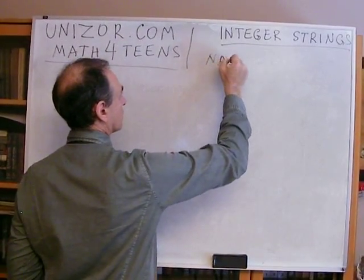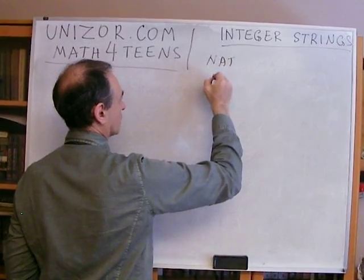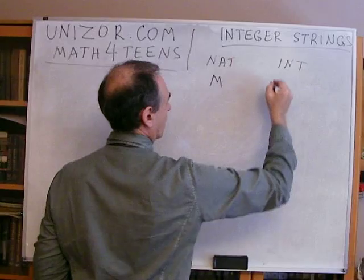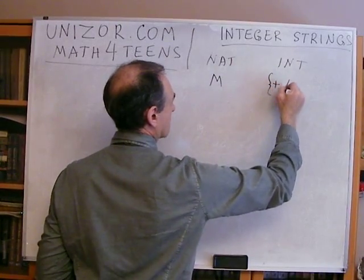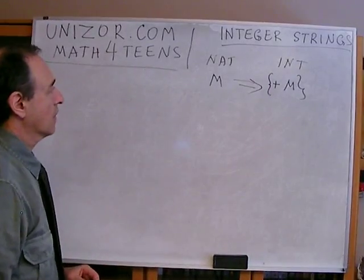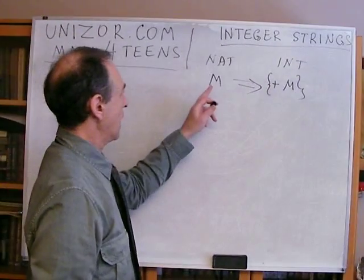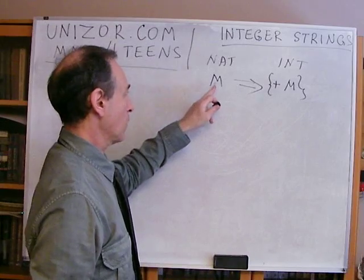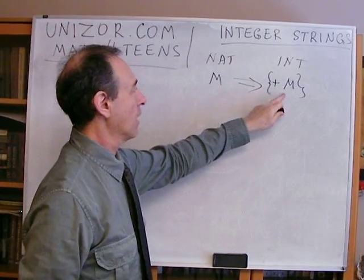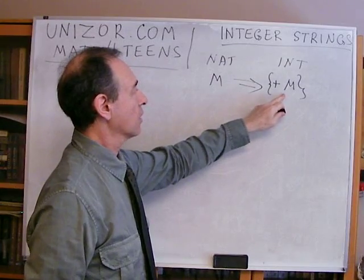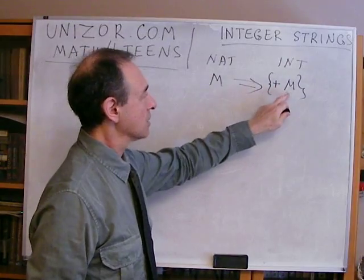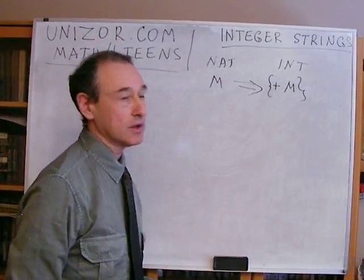If this is the natural number, let's call it M. The correspondence maps M to the integer {+M}. So any natural number — 1, 2, 3, 123 — corresponds to an integer number with a plus inner sign and the natural part exactly the same.